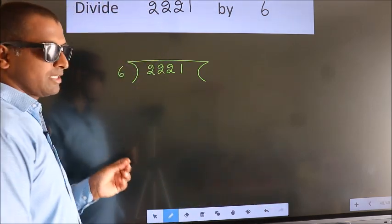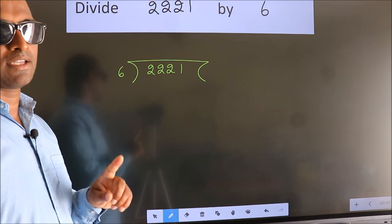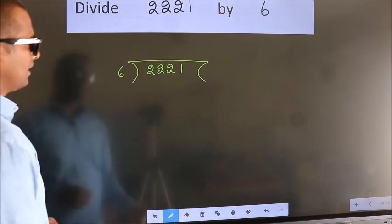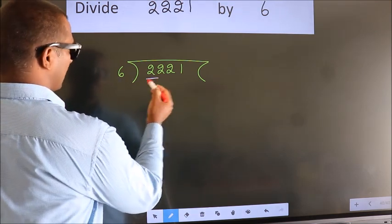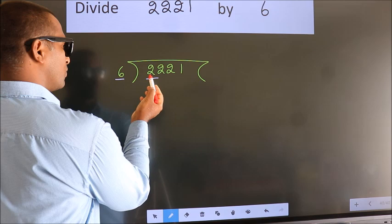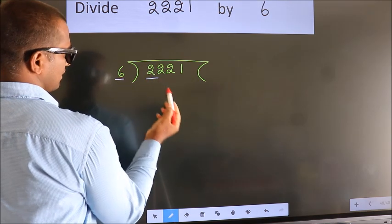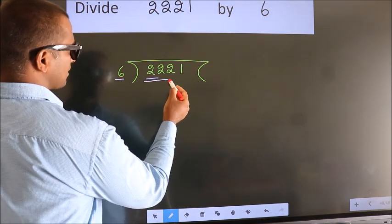2221 here, 6 here. This is your step 1. Next, here we have 2, here 6. 2 smaller than 6, so we should take 2 numbers. 22.